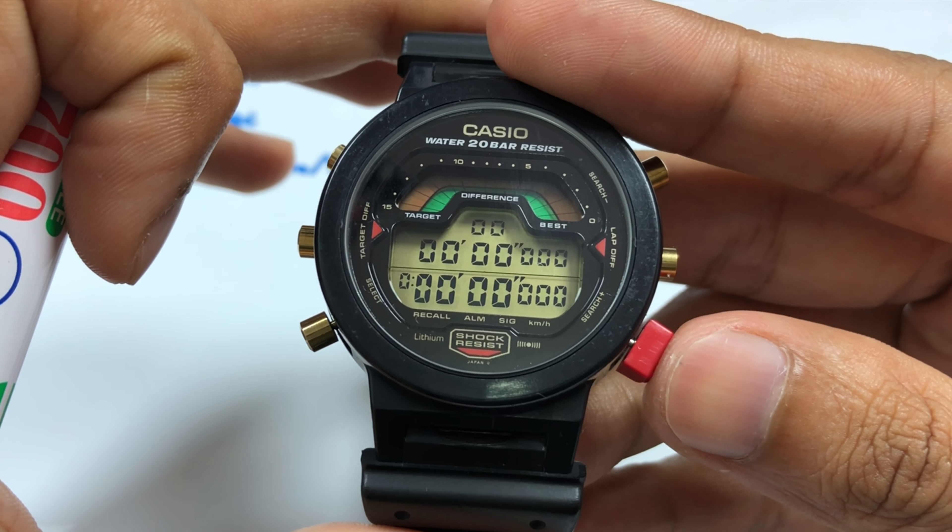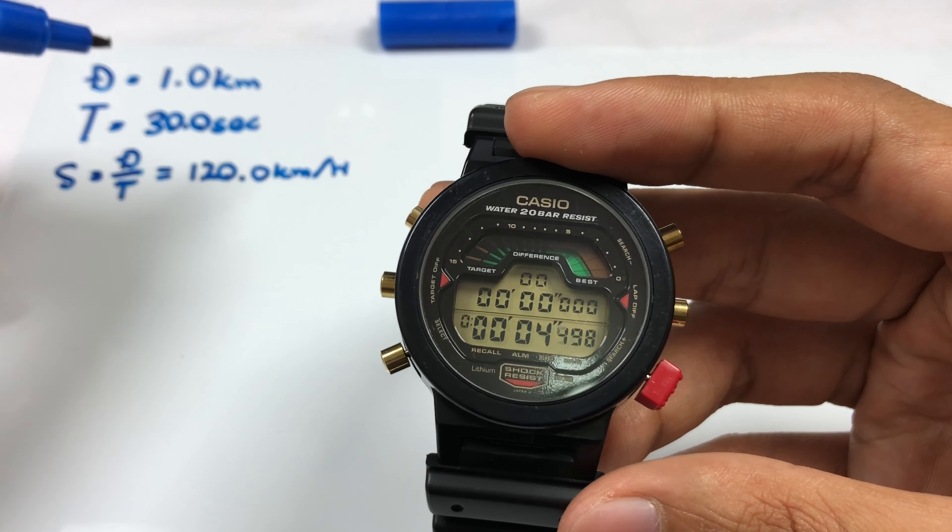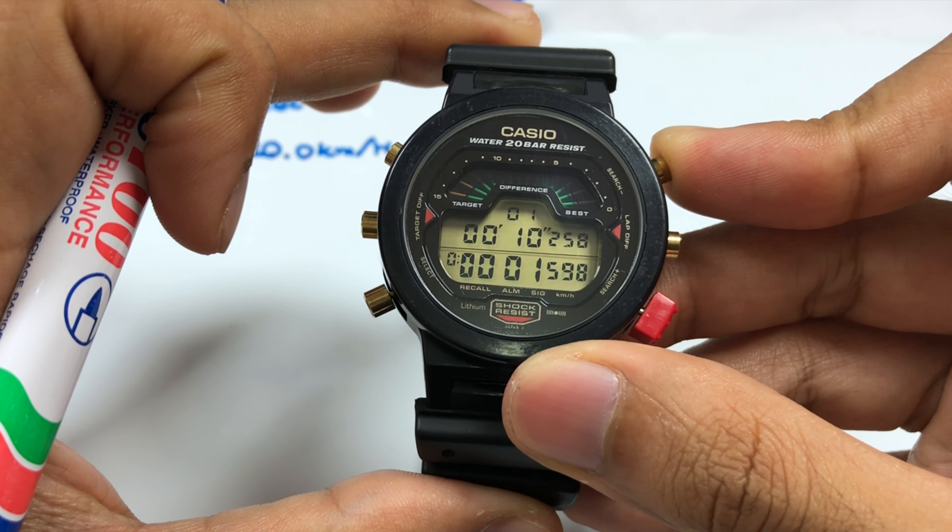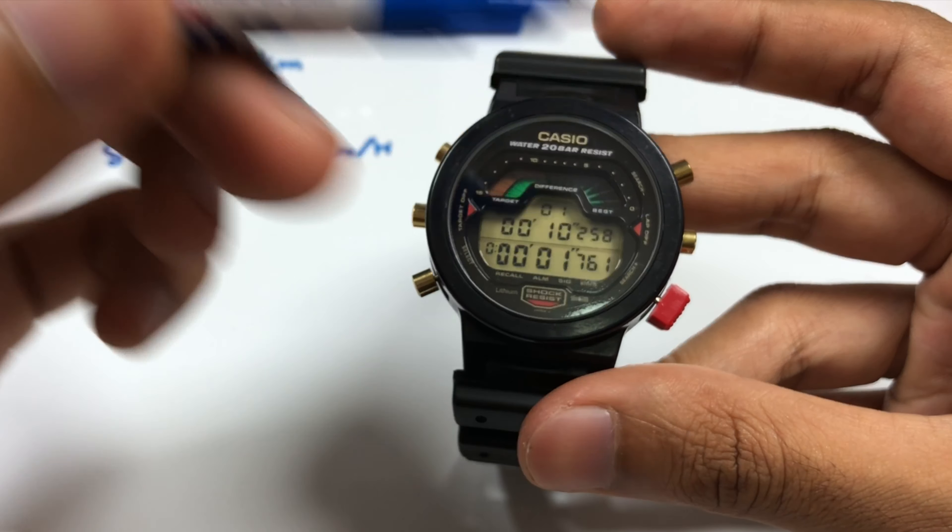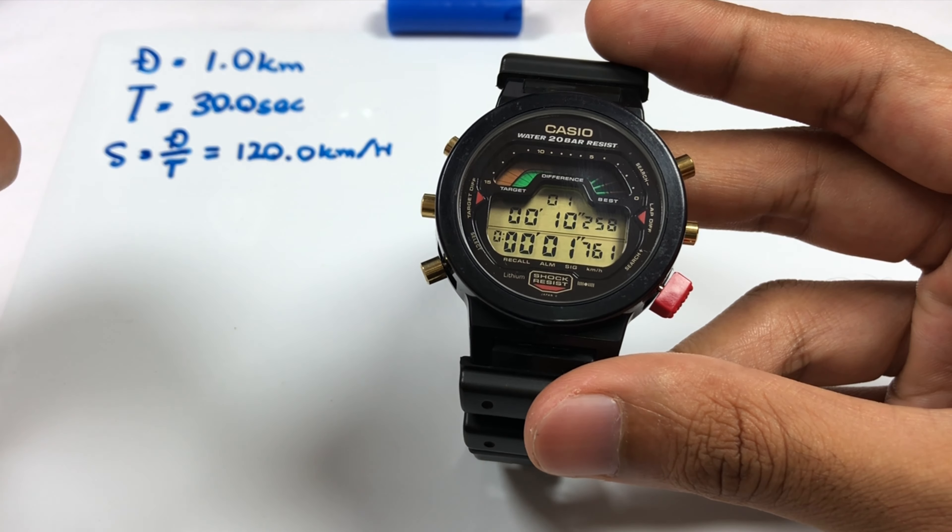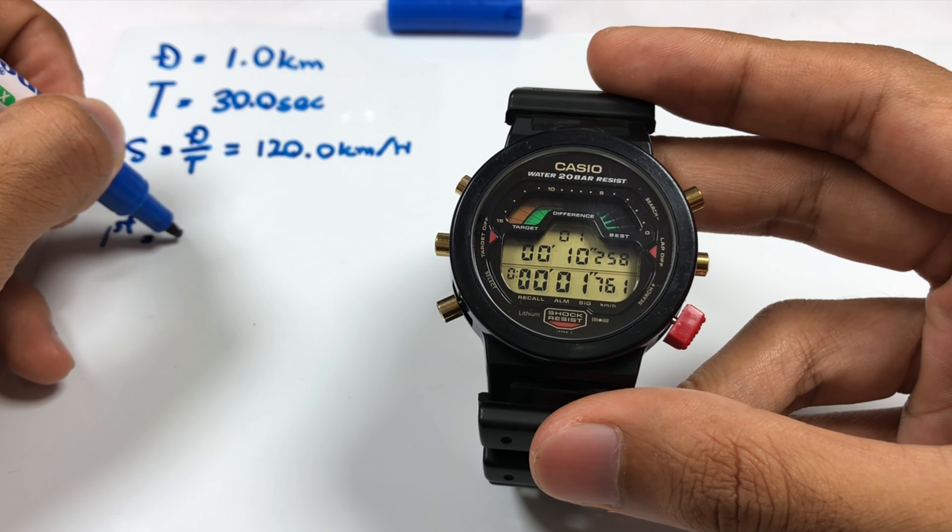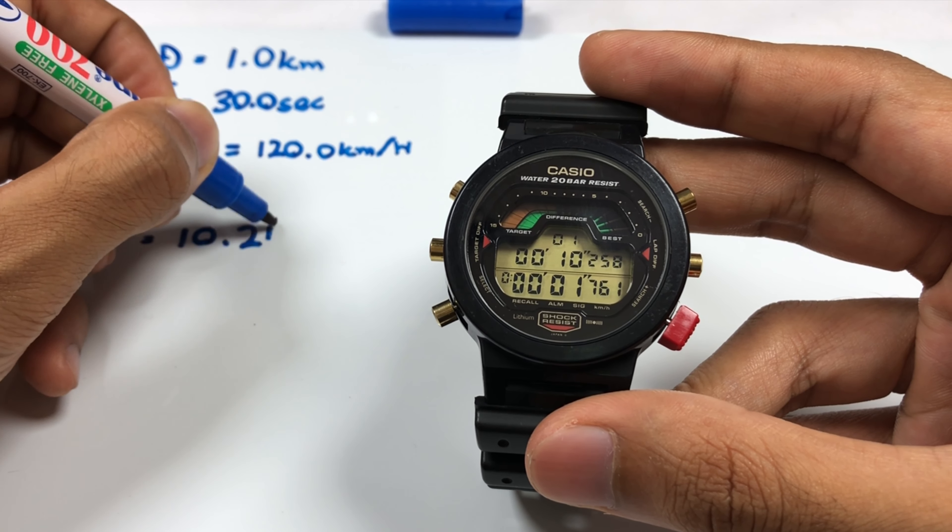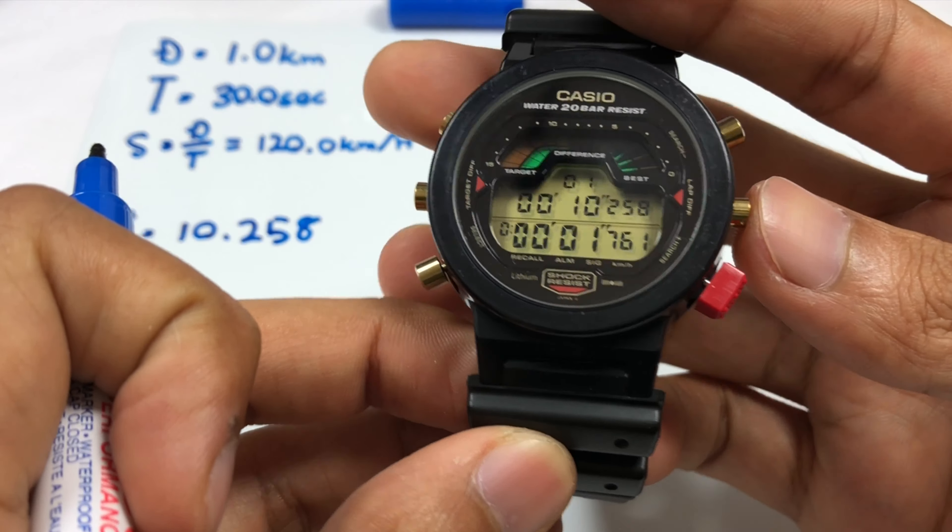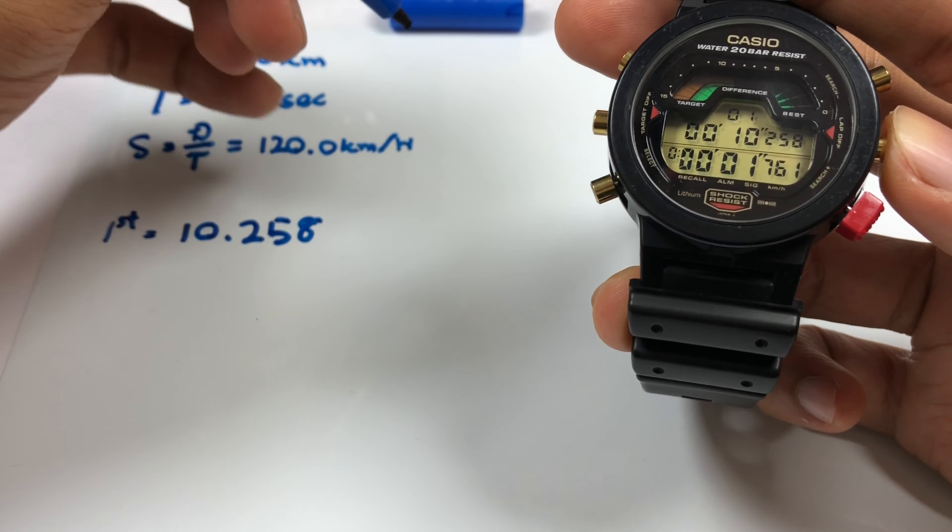Moving on to the lap function. Press this button to start. I'm going to record all this time. First lap, let's stop here. The watch beeped because our first lap is better than our target time of 30 seconds. First lap is 10.258 seconds, and the watch will calculate the speed at your first lap as well: 359.46 kilometers per hour. Quite fast, right?